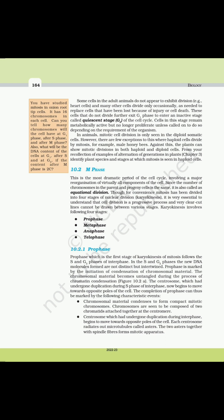10.2.1 Prophase. Prophase, which is the first stage of karyokinesis of mitosis, follows the S and G2 phases of interphase. In the S and G2 phases, the new DNA molecules formed are not distinct but intertwined. Prophase is marked by the initiation of condensation of chromosomal material — the chromosomal material becomes untangled during chromatin condensation. The centrosome, which had undergone duplication during S phase, now begins to move towards opposite poles of the cell.